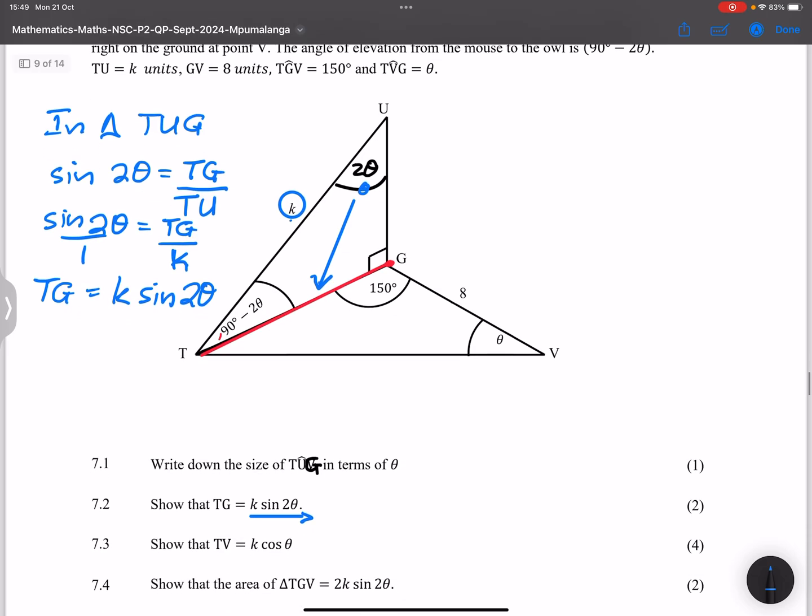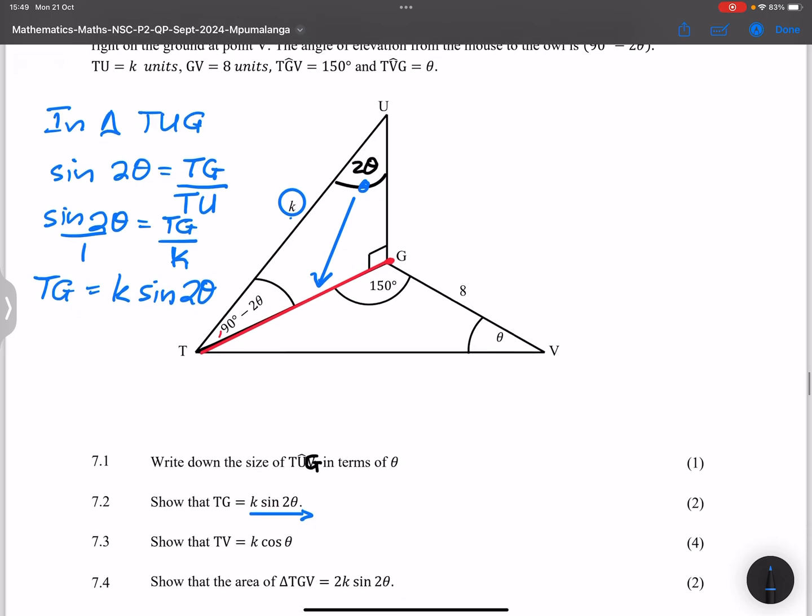Right now for the next one. They say show that TV is equal to k cos θ. So we're looking at TV which is this guy over here. Right, so we already know TG. We've got an angle that is opposite that. But we also have 150 which is an angle opposite that. So we're going to use our sine rule. So we're going to say in triangle TGV.